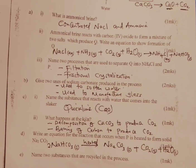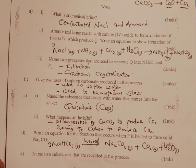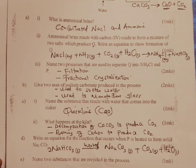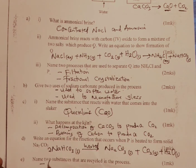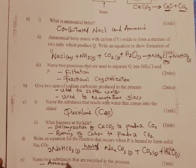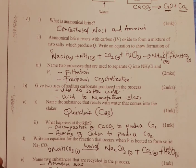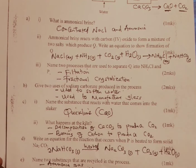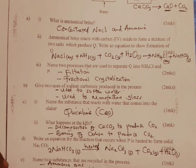Name two substances that are recycled in this process. Number one: ammonia gas. Number two: carbon dioxide. Those are the two main raw materials which are recycled in the Solvay process.